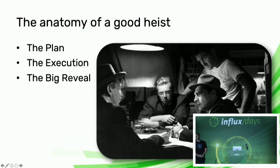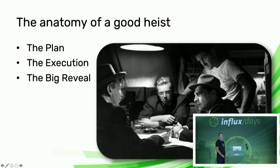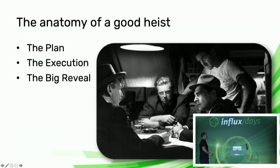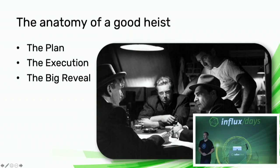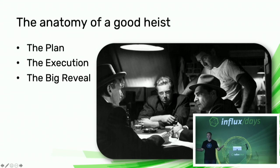The heist movie has a really simple anatomy: you've got the plan, you've got the execution, and you've got the big reveal at the end — very satisfying, very awesome. This is a screenshot from The Asphalt Jungle, one of the originals that kicked off the whole genre of the modern-day heist movie. And before you guys ask what the heck I'm talking about — I also really love really forced analogies, so this is going to be good for me.